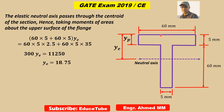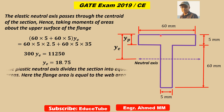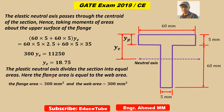Now our target is to find YP. The plastic neutral axis divides the section into equal areas. If you study about plastic neutral axis in books, you will see many explanations with diagrams of the section and the stress diagram, and they all show that it divides the section into equal areas. Looking at this section, the flange area is 300 and the web area is also 300.